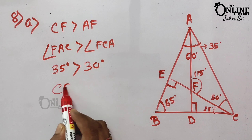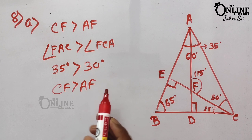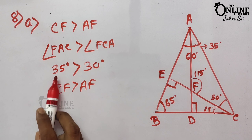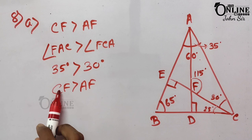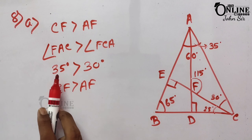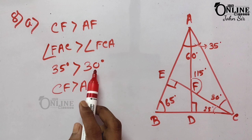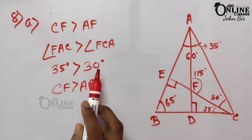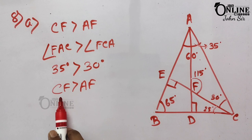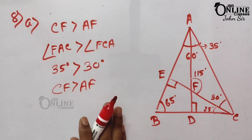Angle FAC = 35° which is greater than angle FCA = 30°. Therefore CF > AF, because the side opposite the greater angle is greater and the side opposite the smaller angle is smaller. CF > AF is proved.